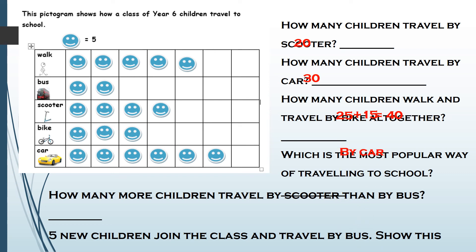I'm sorry if you're seeing the numbers in the wrong places. How many more children travel by scooter than by bus? Scooter has four lots of five which makes twenty, and bus has two lots of five — so this is a takeaway again, remember how many more means taking away. Twenty take away ten that travel by bus makes ten. Finally, five new children join the class and travel by bus — show this on the pictogram. There is my smiley face I added to the pictogram.